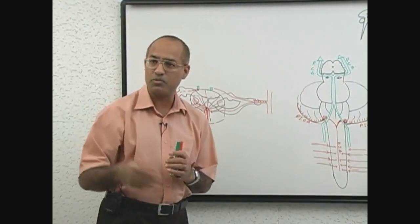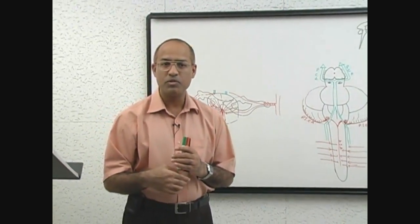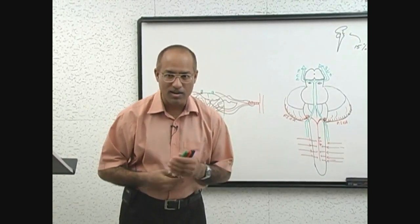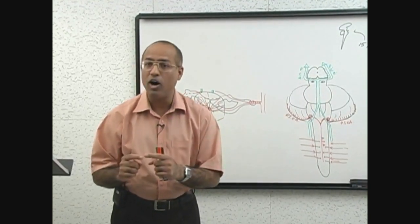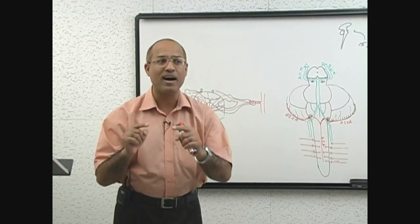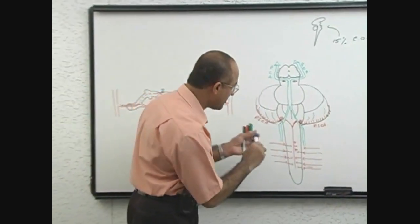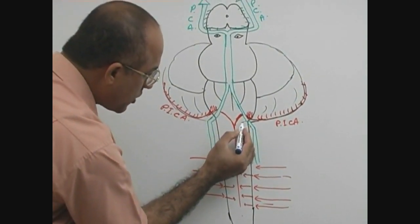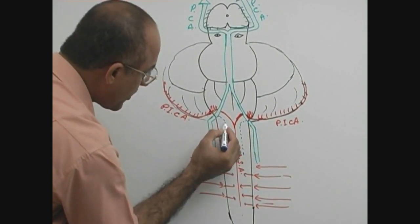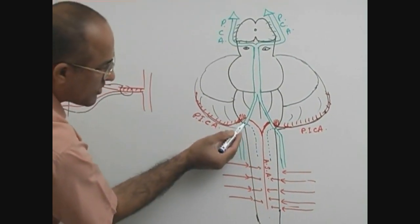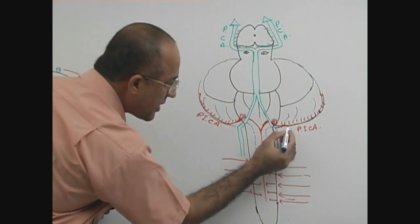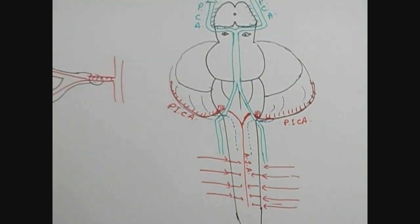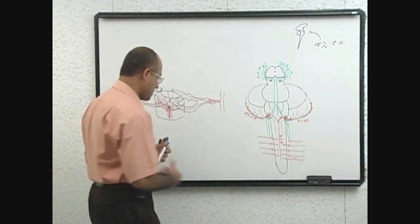Don't tell me that they are coming from some artery which is posterior. Yes, posterior spinal arteries are also coming from vertebral artery. Either they come directly from the vertebral artery or they come indirectly from PICA, posterior inferior cerebellar artery. In some people, posterior spinal artery is coming directly from vertebral artery, or in some people it is coming from PICA.